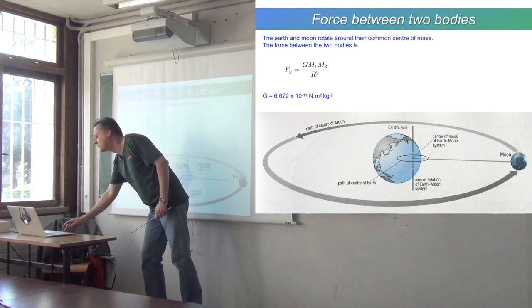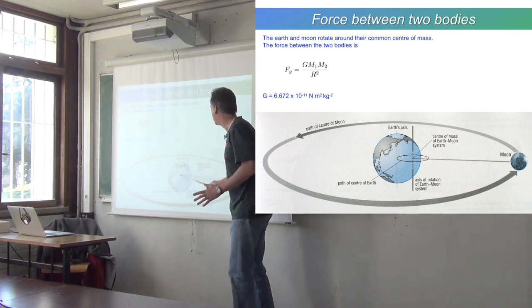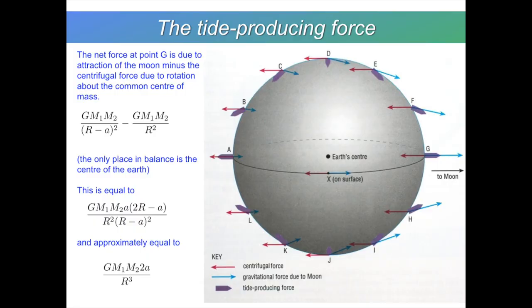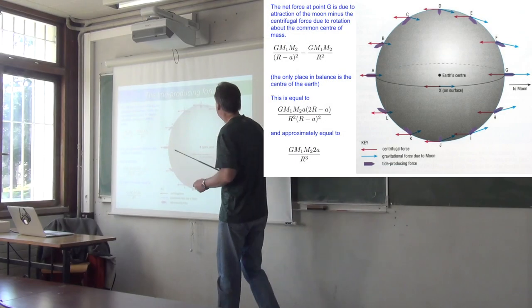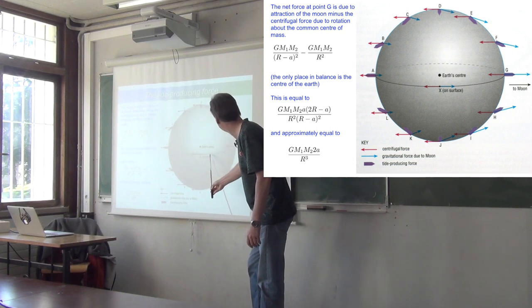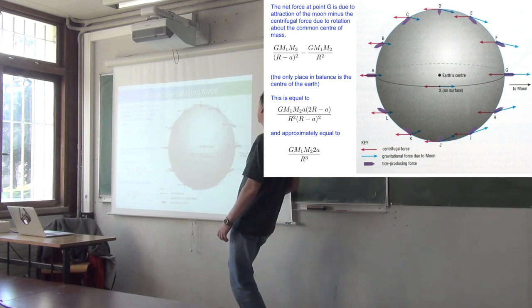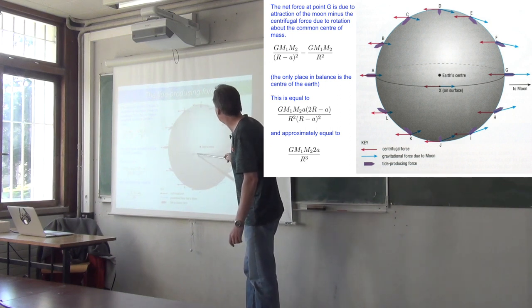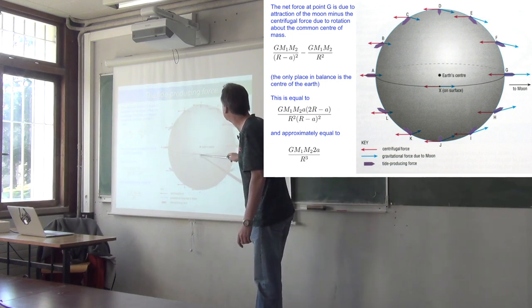What about this centrifugal force? Well, it's going to be the same at the center of the Earth. It's going to be the same because they're in balance. So if we think about the net force that's generating the tide, then at the Earth's center, here's the blue arrow is gravity, the force of gravity attracting us to the Moon. The red arrow is a centrifugal force, which is equal and opposite at the Earth's center.